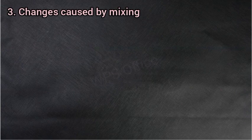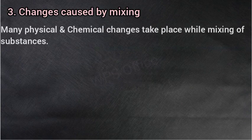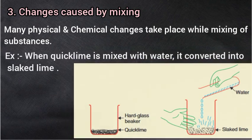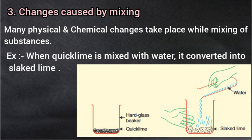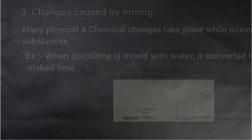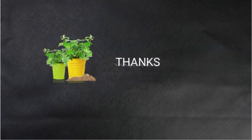And the next — changes caused by mixing, मिलावट के कारण होने वाले परिवर्तन. Many physical and chemical changes take place while mixing of substances — बहुत सारे भौतिक और रासायनिक परिवर्तन पदार्थों को आपस में मिलाने के कारण भी होते हैं. For example: when quick lime is mixed with water, it converts into slaked lime — जब कली चूना को पानी के साथ मिलाया जाता है, तो यह बुझा हुआ चूना बन जाता है. And that's all about your chapter Changes Around Us — thank you.